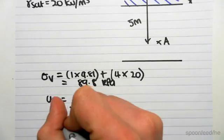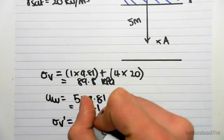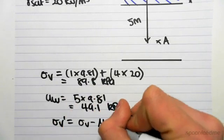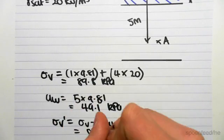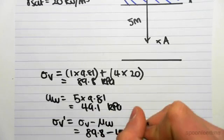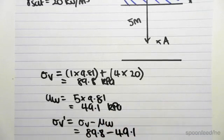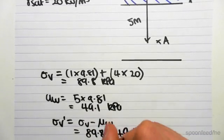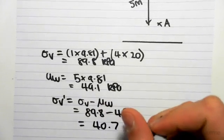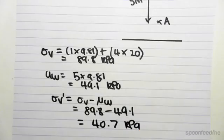Which means that the effective stress will equal sigma v minus the pore water pressure, which is 89.8 minus 49.1. We get 40.7 kPa.